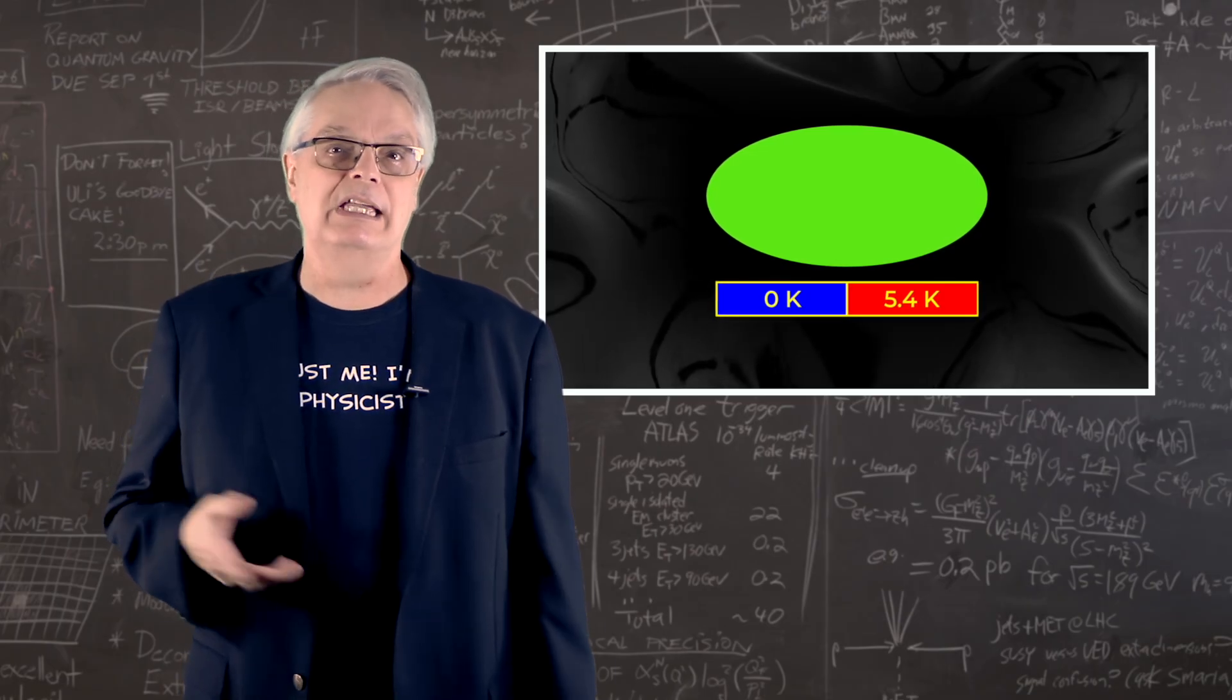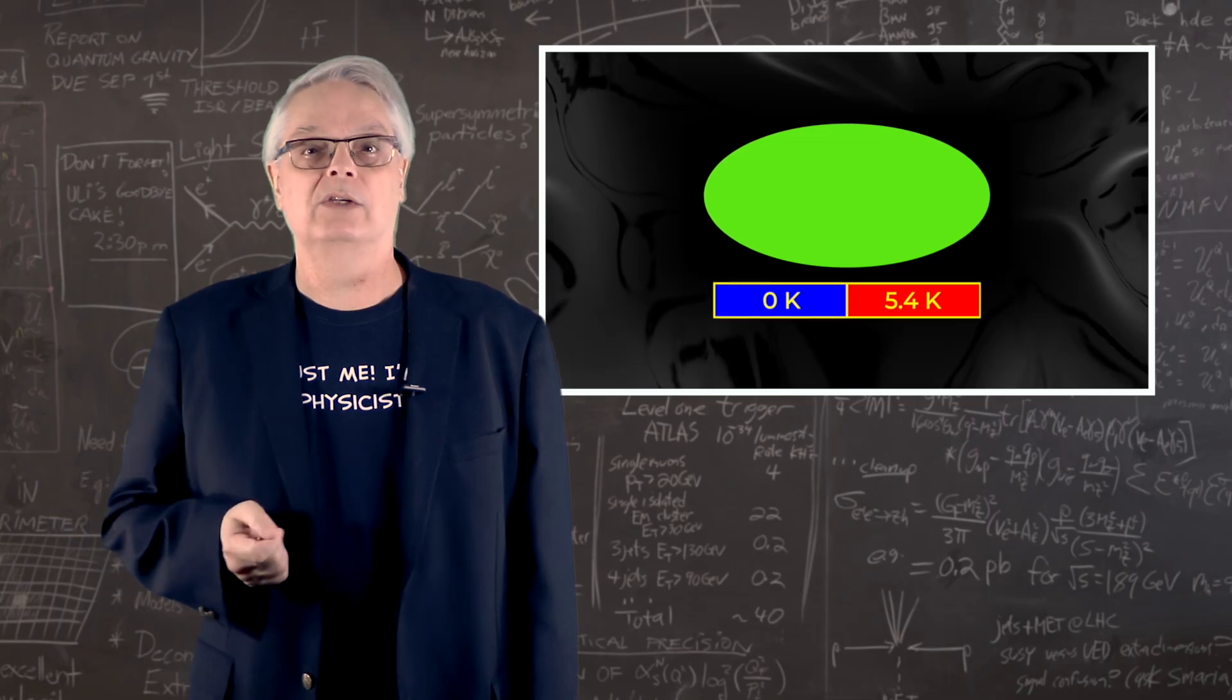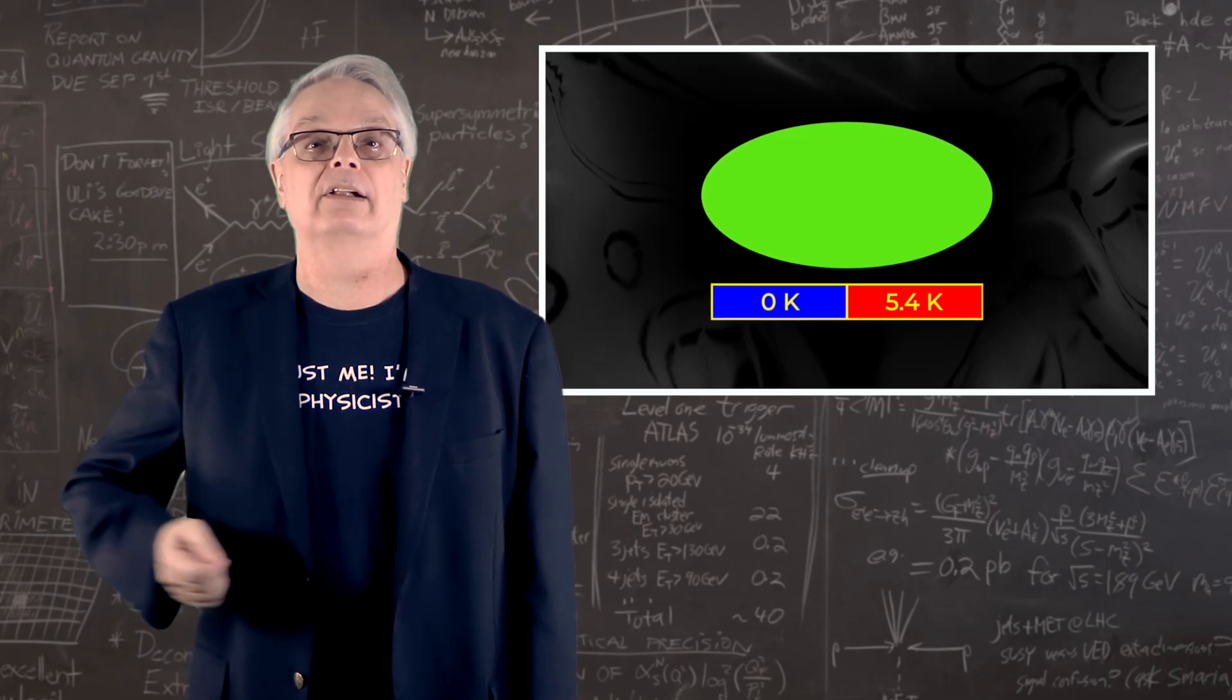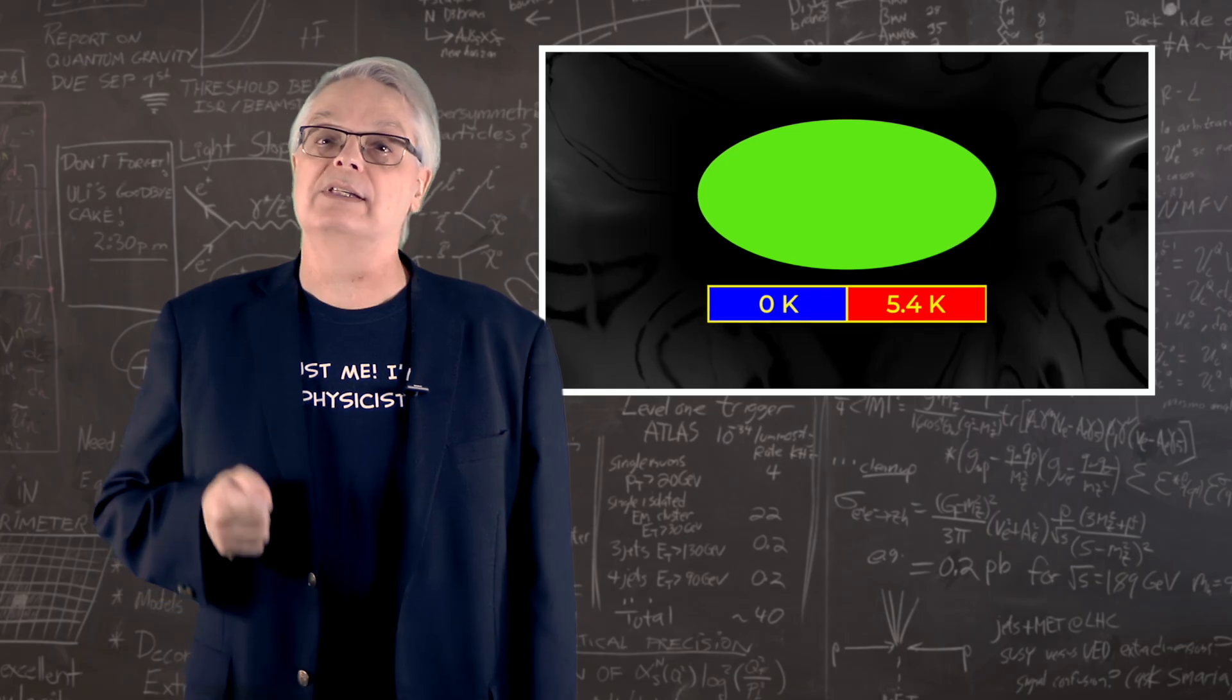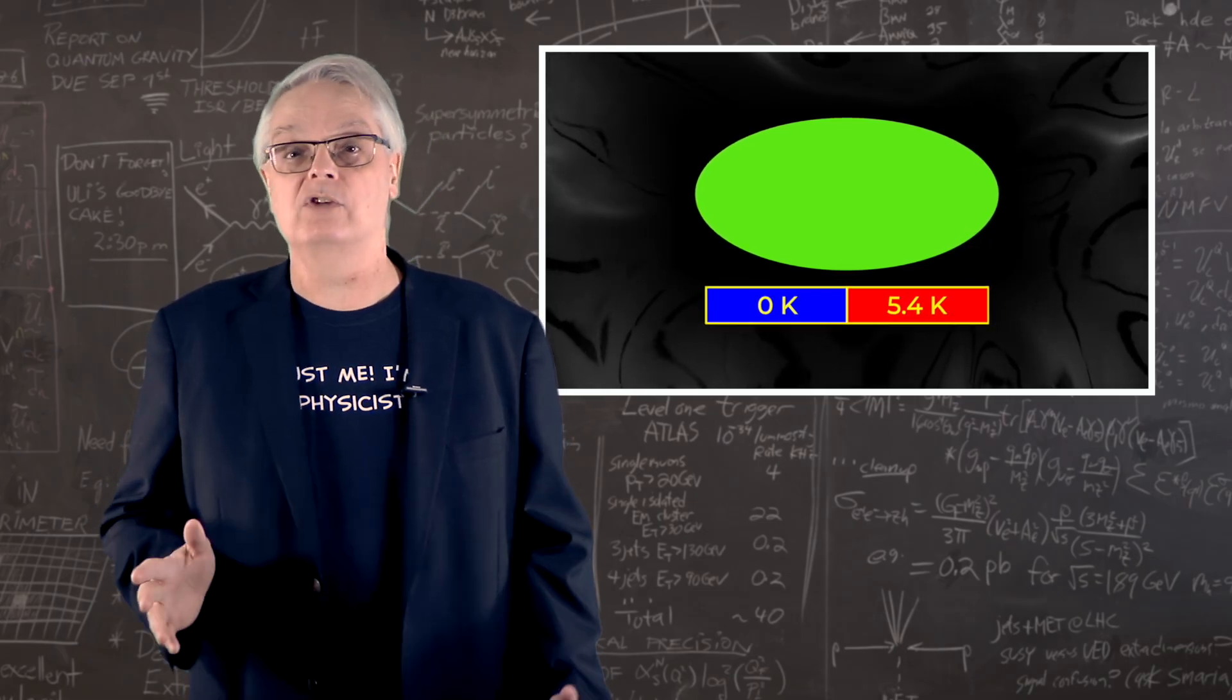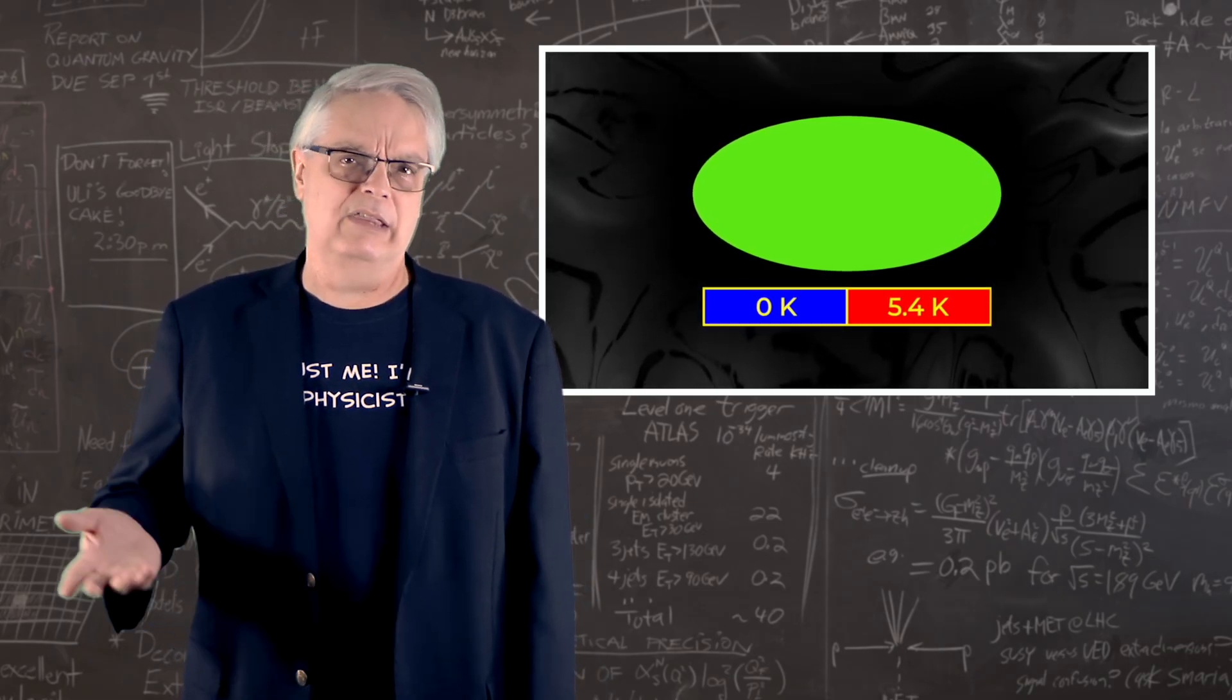Of course, you don't see either red or blue. All you see is green, which represents 2.73 Kelvin. The reason it's green everywhere is the CMB is the same in every direction to within about a tenth of a percent.